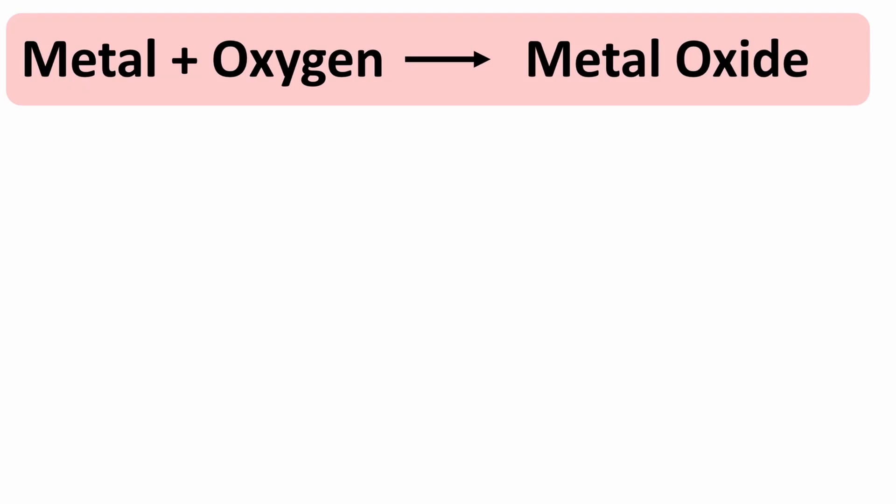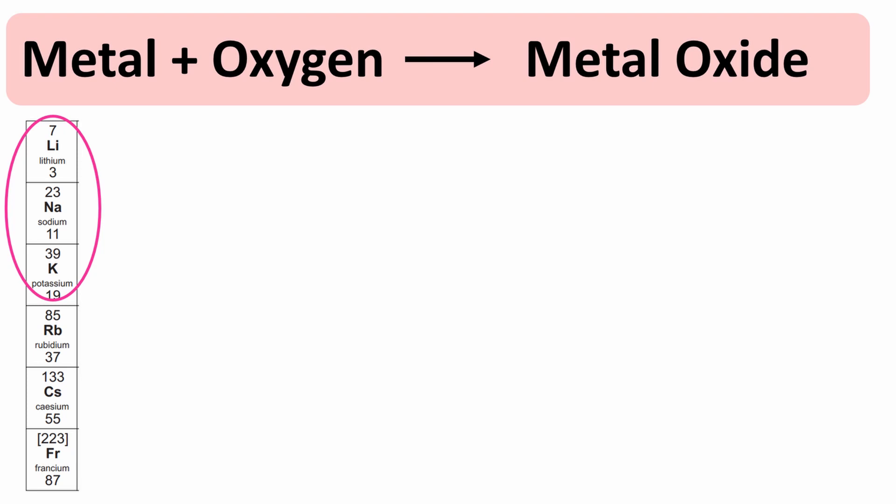So the general equation for the reactions of alkali metals with oxygen is the following: metal plus oxygen forms a metal oxide. For GCSE chemistry you need to be able to know the reactions of the first three alkali metals with oxygen, so lithium, sodium and potassium with oxygen. So let's go through the word and symbol equations for each of these reactions.